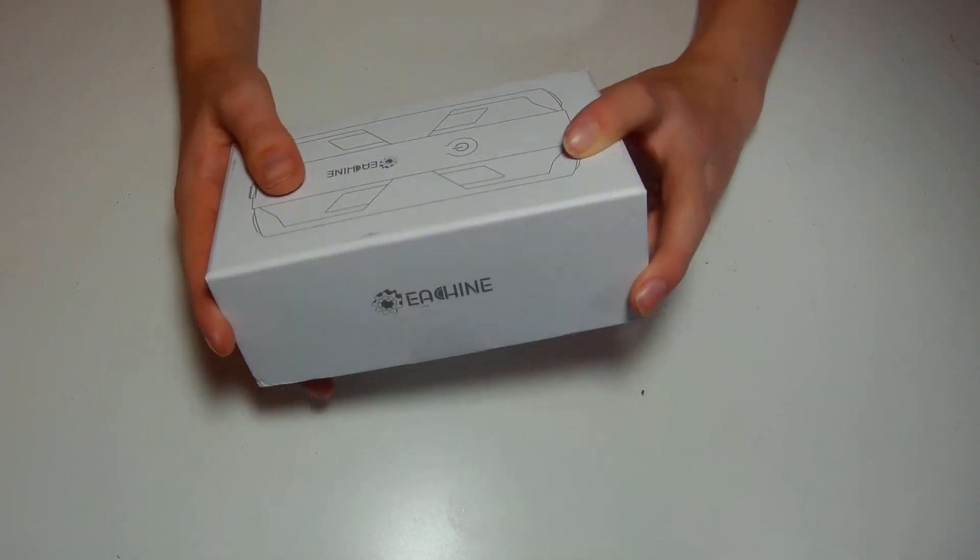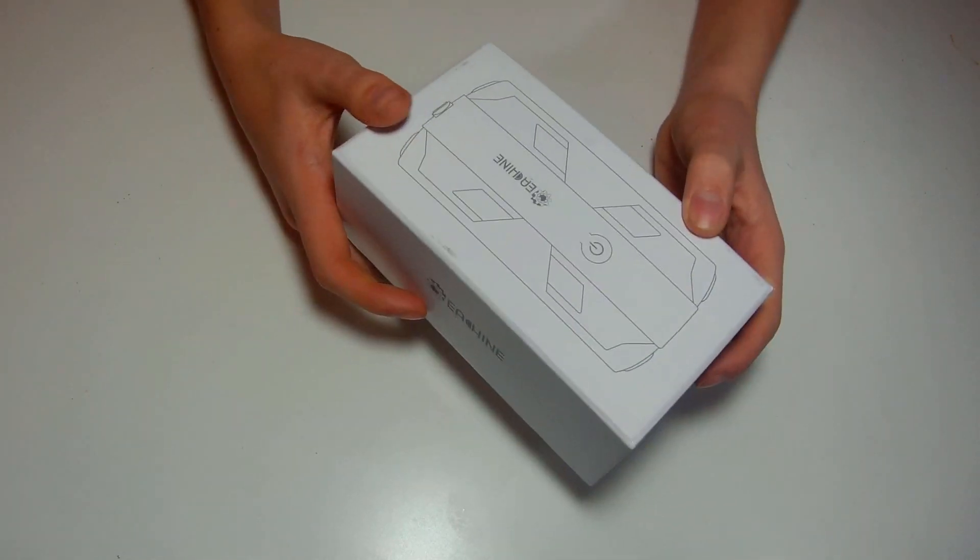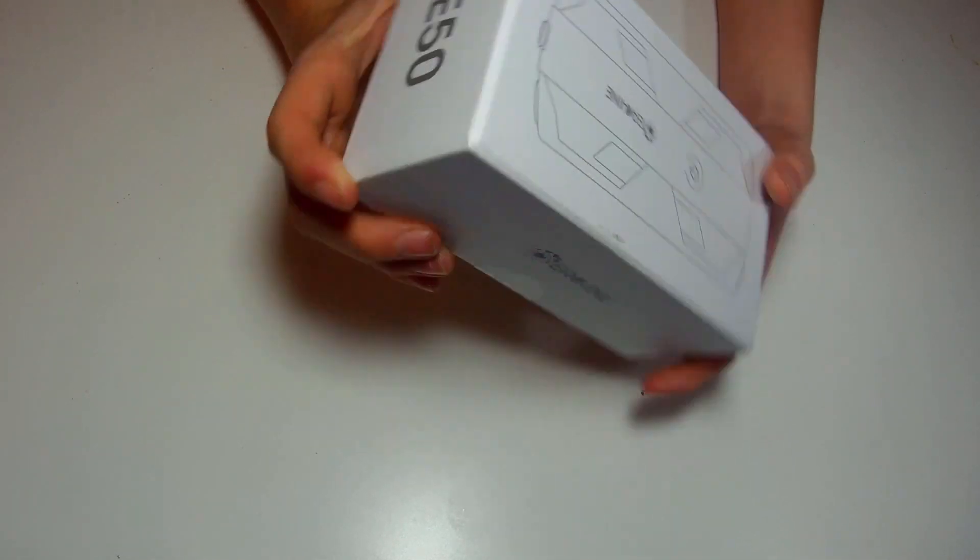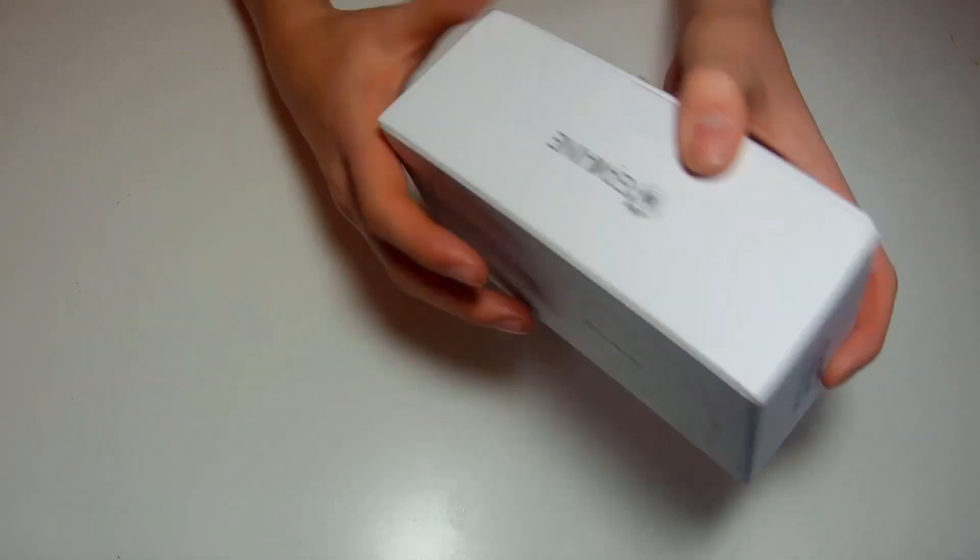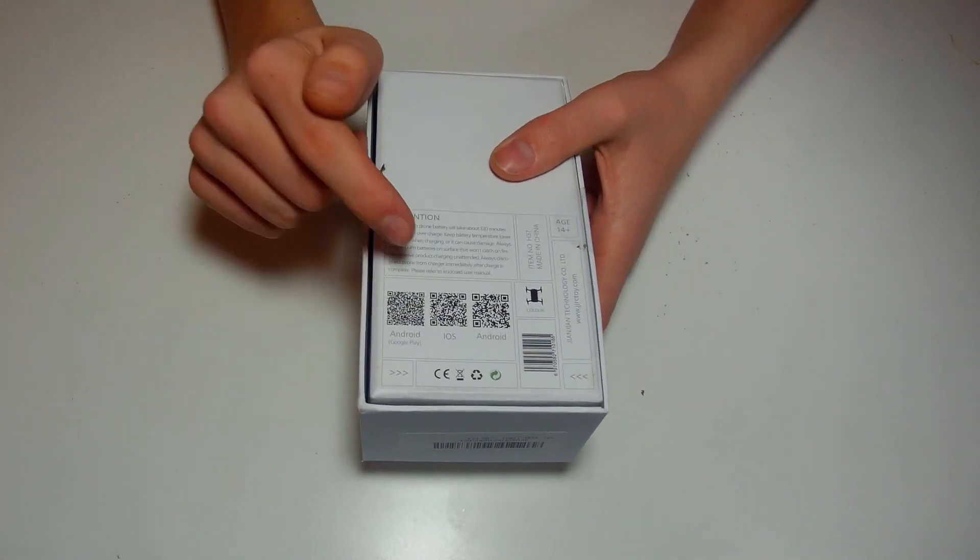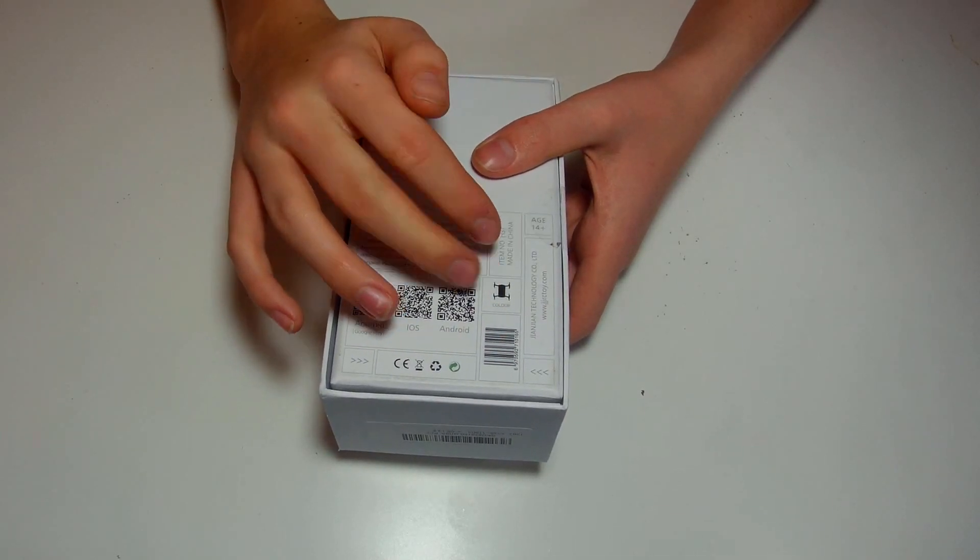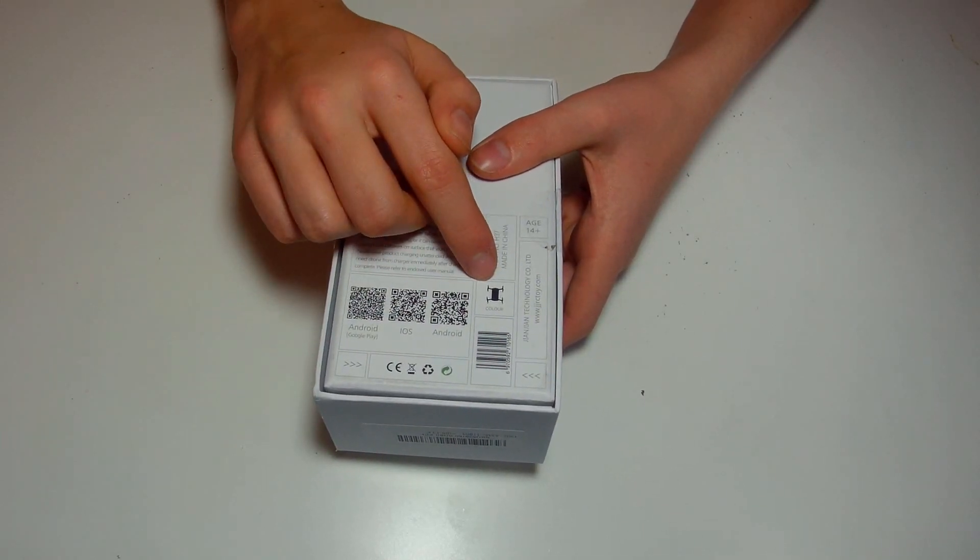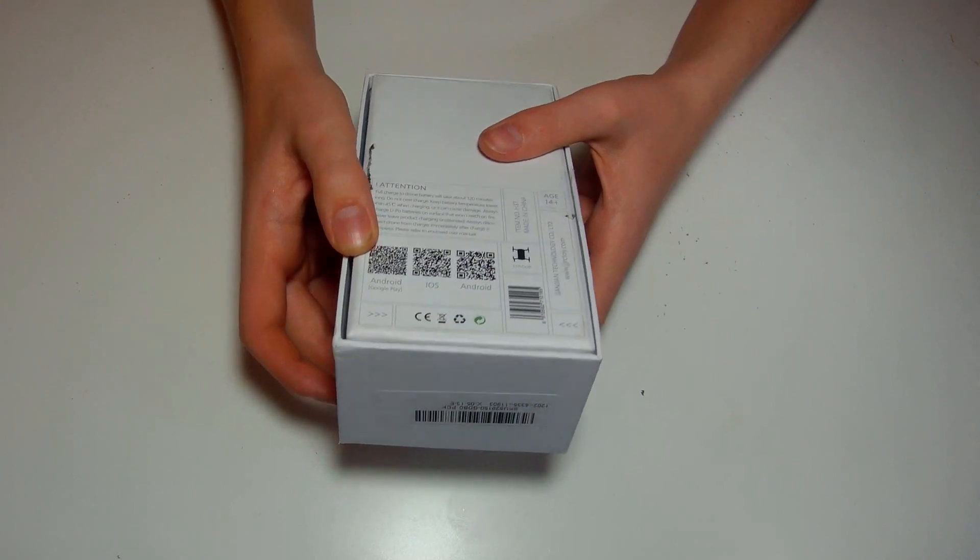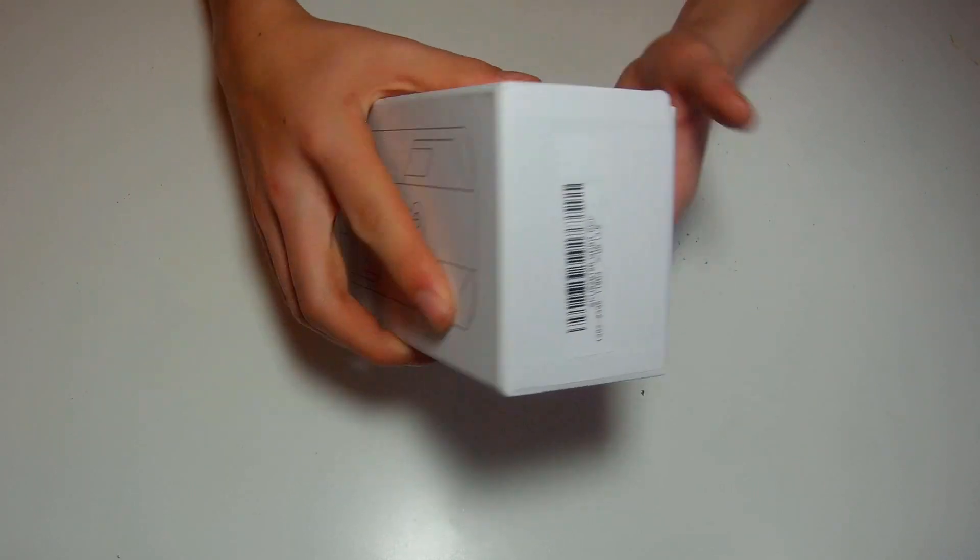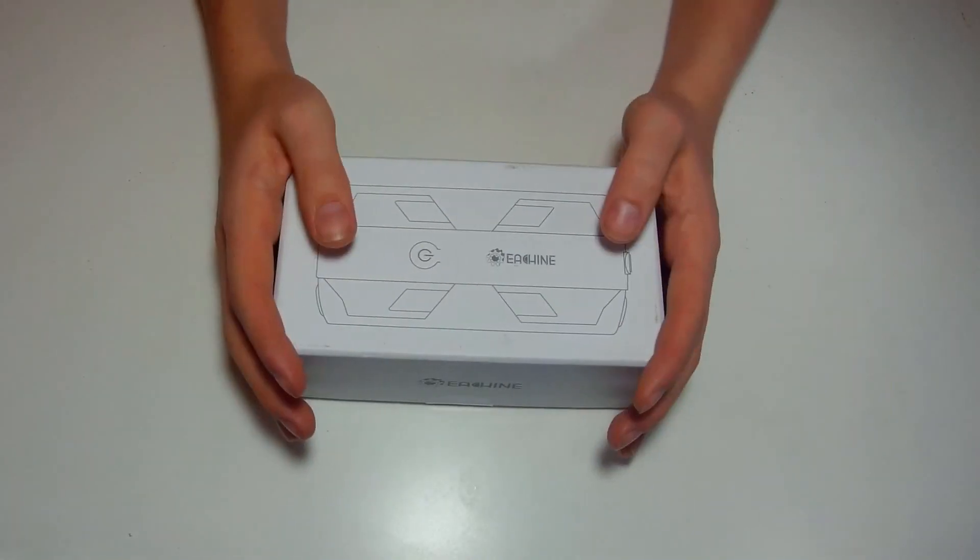On the box it's a very sleek, modern designed box. You've got the design of the quadcopter on the top, branding on the sides. Then on the bottom you've got how to get to the app, the color options which include a white one and a pink one. Made in China of course. So let's open this thing up.